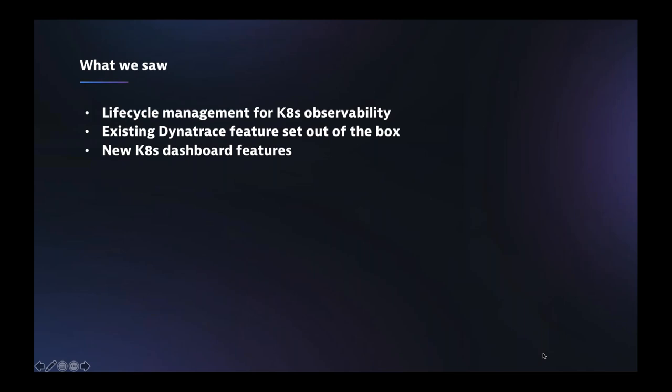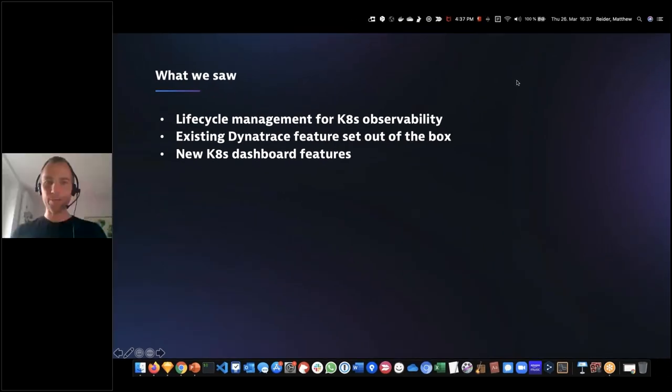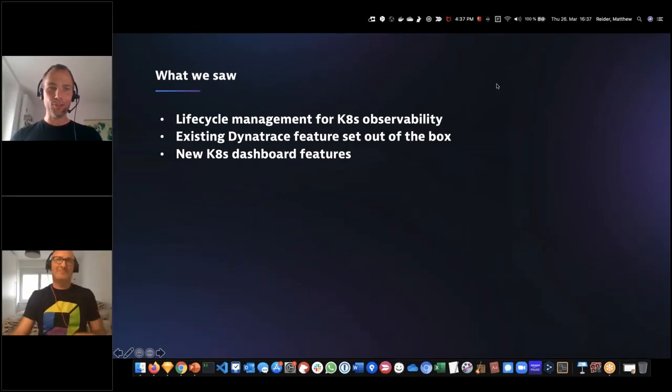That's where I'll finish up. To summarize what I just showed you: the lifecycle management for Kubernetes through the Helm chart and the operator; how after just 60 seconds you can get all these powerful standard Dynatrace core features - looking at nodes through the host view, service flows, SmartScape, diagnosing transactions; and some of the new features coming within weeks: cluster health, the workloads/cloud applications view, and the events panel showing containers being killed over and over again.